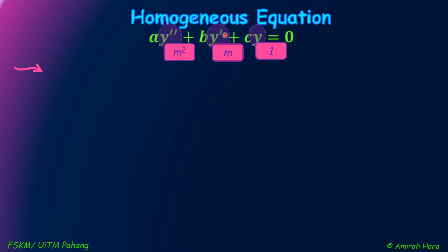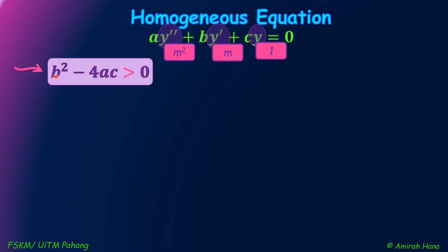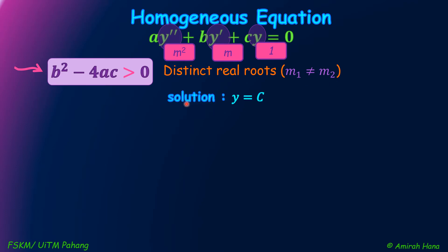Under homogeneous equation, there are three types of solutions. First, if B squared minus 4AC is greater than 0, we will get distinct real roots where M1 is not equal to M2. The solution is given by Y equals to C1 times E to the power of M1X plus C2 times E to the power of M2X.